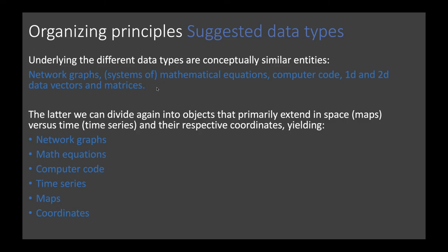We can divide 1D and 2D matrices into objects that primarily extend into space — like maps — versus objects that extend into time — like time series. This very simple set of data types covers a very general range. All of this can be done with just two file types: exactly those file types specified in the original BIDS standard as the desired way to store information.